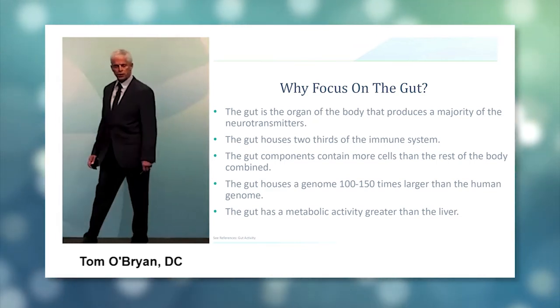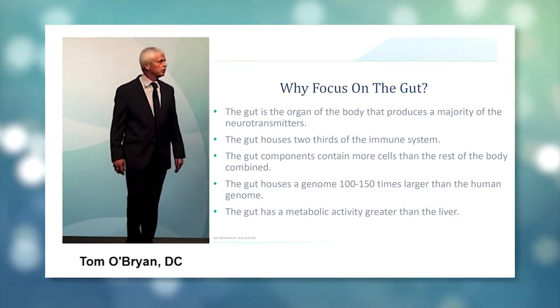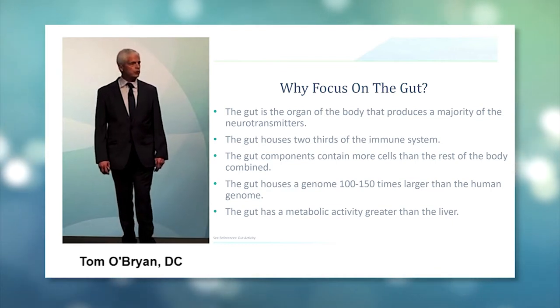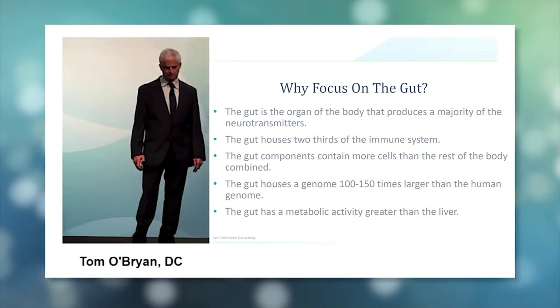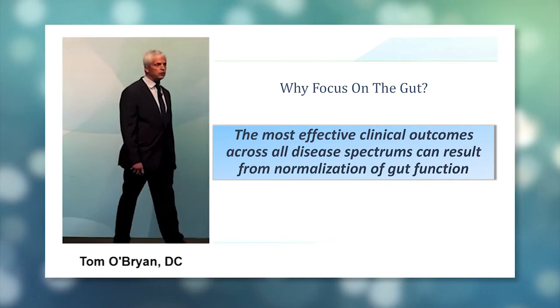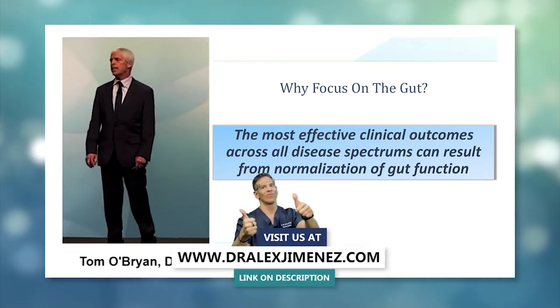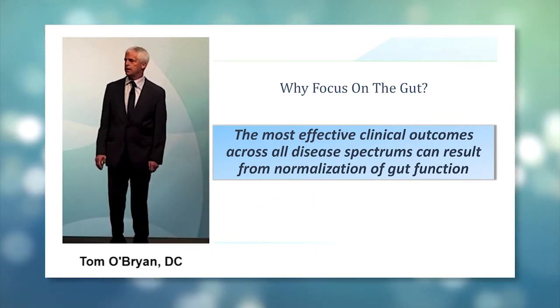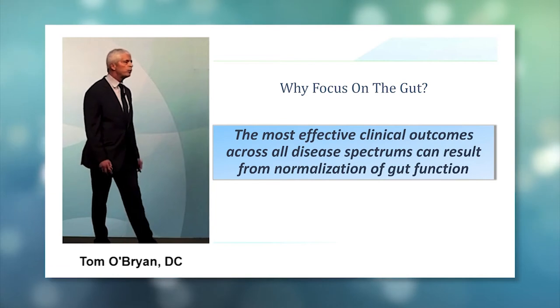The gut houses a genome 100 to 150 times larger than the human genome. And we all know that genes determine function. We call it the metabolome. The bacterial genes, the genes of the microbiota, have a huge impact on the metabolome. The gut has a metabolic activity greater than the liver. So the most effective clinical outcomes across all disease spectrums can result from normalization of gut function. Treat the gut. More often than anything else.